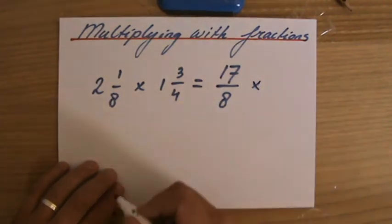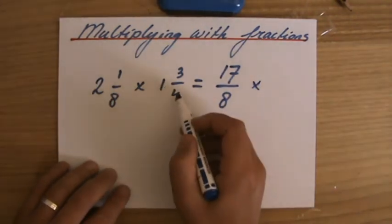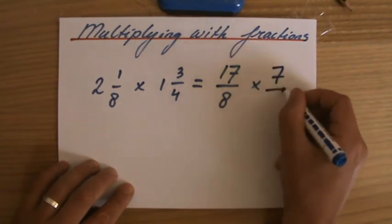Now, times 1, 3 over 4. That is 1 times 4 is 4 plus 3. That is 7 over 4.